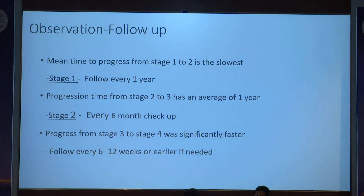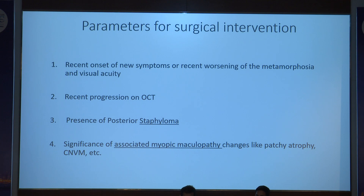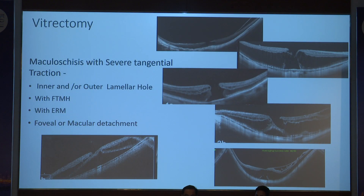At stage 4, probably this is the time to take them for surgery. Parameters for surgical intervention include recent onset of new symptoms, recent worsening of metamorphopsia and visual acuity, progression on OCT, associated posterior staphyloma, or significant associated myopic maculopathy changes like patchy atrophy and CNV. These help discuss prognosis with the patient and attendants.